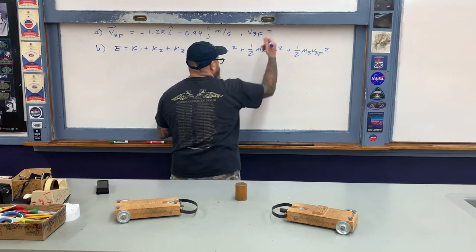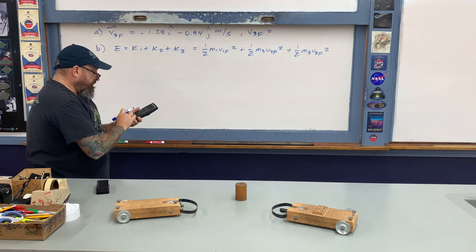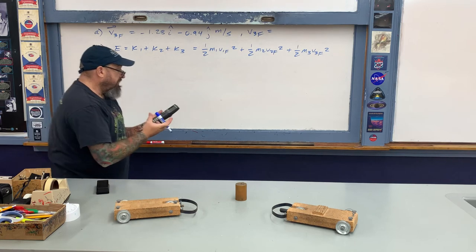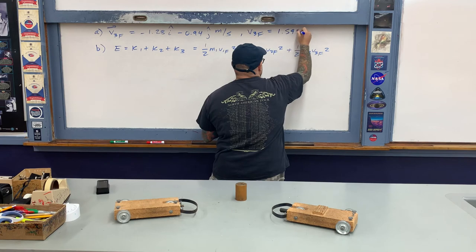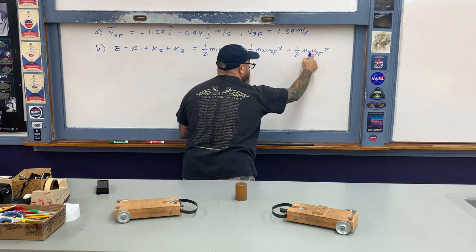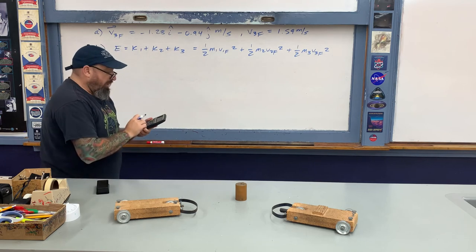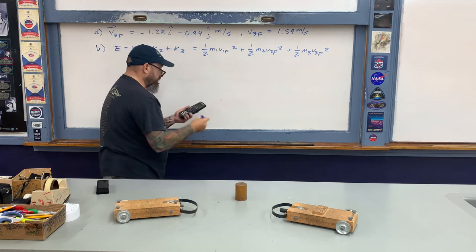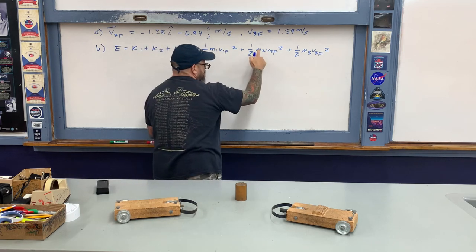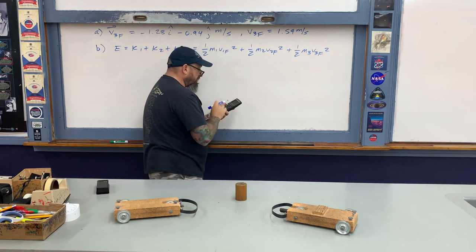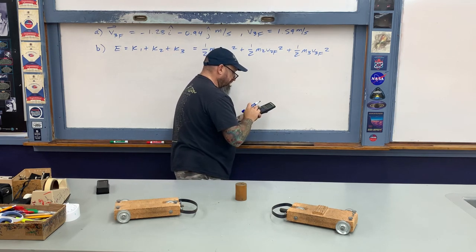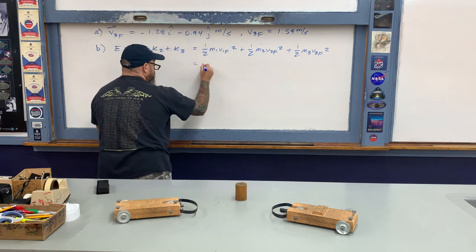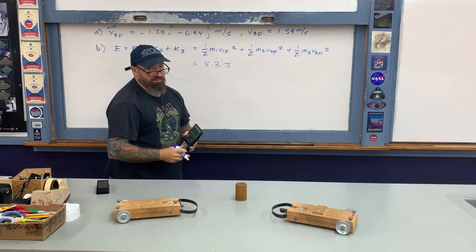The magnitude of v3_final is found from: √(1.28² + 0.94²) ≈ 1.59 meters per second. Plugging into the energy equation: ½(1)(1²) + ½(2)(2²) + ½(3)(1.59²) = 0.5 + 4 + 3.8 = 8.3 joules. The energy released in the explosion is approximately 8.3 joules.